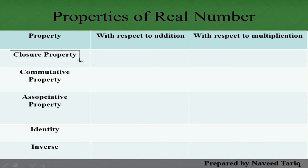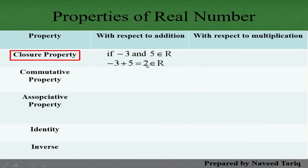Closure Property کیا ہوتی ہے: اگر ہمارے پاس کوئی دو real numbers ہیں — کیونکہ ہم real numbers کی properties دیکھ رہے ہیں — ان کو ہم add یا multiply کریں تو جو answer آئے وہ بھی ایک real number ہو، تو یہ Closure Property ہے۔ مثلاً -3 plus 5 equals 2، اور 2 بھی ایک real number ہے۔